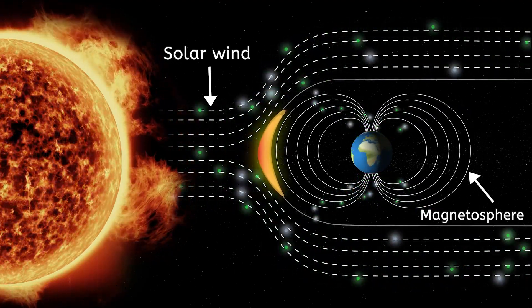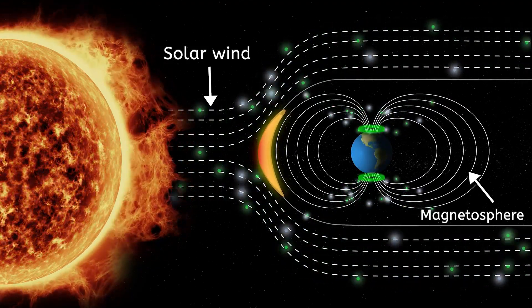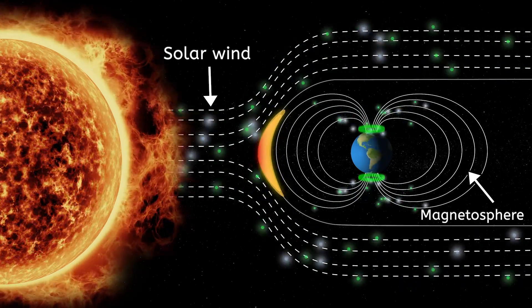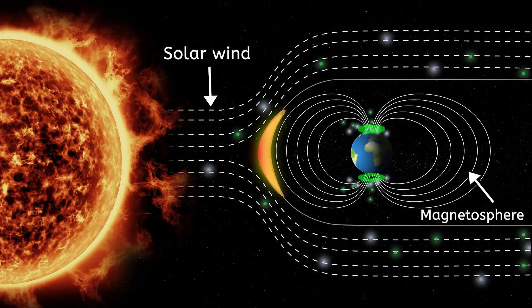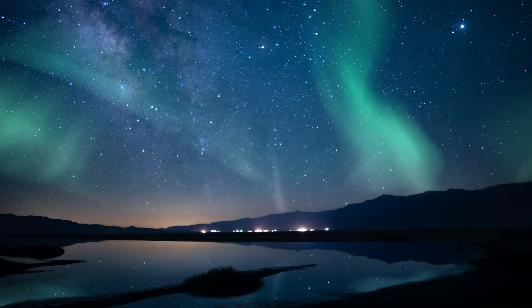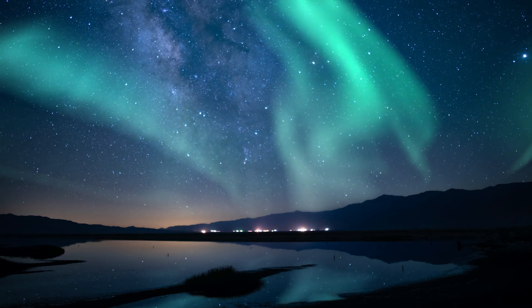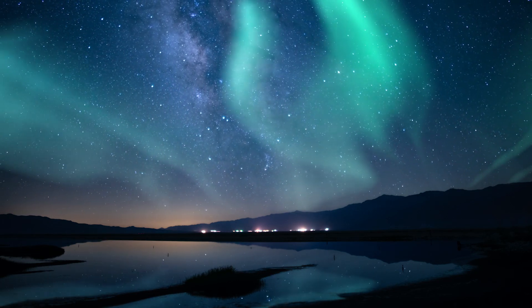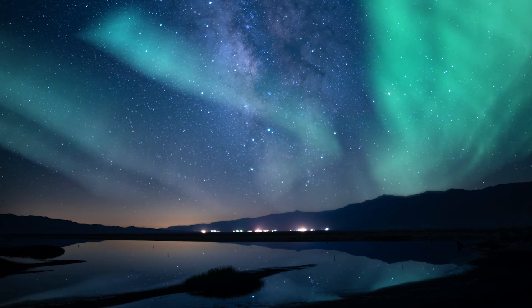However, during periods of intense solar activity, such as solar flares, the solar wind can carry an especially large number of charged particles with a lot of energy. When these energetic particles collide with the gases in Earth's atmosphere, especially oxygen and nitrogen, they create the beautiful shimmering lights we call auroras.